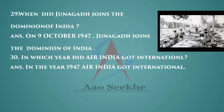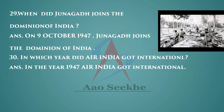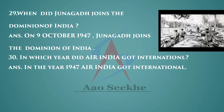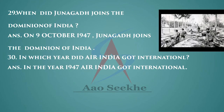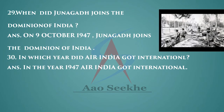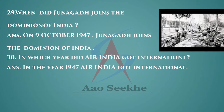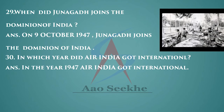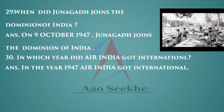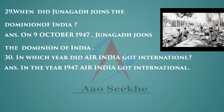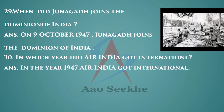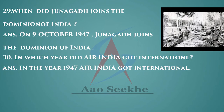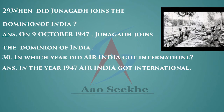When did Junagadh join the Dominion of India? On 9th October 1947, Junagadh joined the Dominion of India. In which year did Air India get international status? In the year 1947, Air India got international status.